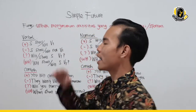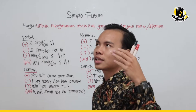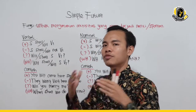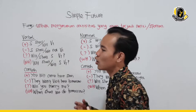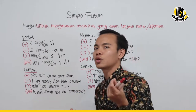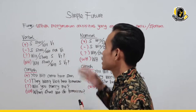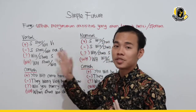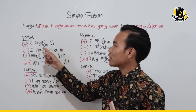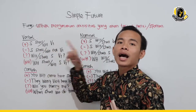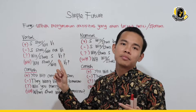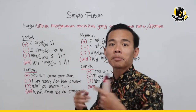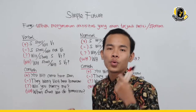Langsung aja biar cepat paham. Kita masuk ke yang verbal. Semua susunan tensis sama — ada positif, negatif, interogatif — hanya yang membedakannya yaitu waktunya. Simple present pakainya do atau does, simple past pakainya did. Sedangkan simple future pakainya will atau shall diikuti kata kerja bentuk pertama. Negatifnya tinggal tambahin 'not' setelah shall atau will.